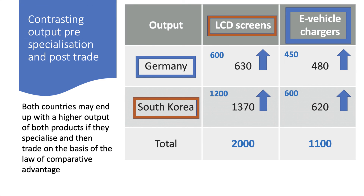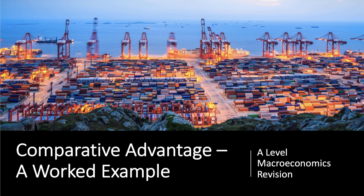Both countries are, in theory, better off than they were before. You can develop this analysis using production possibility curves — there is a video on that. You can challenge the assumptions and think about why this theory might not work in reality. This is the simplified model of comparative advantage, but hopefully a useful exercise for showing how two countries in theory can benefit from specialization and mutually beneficial trade. Thank you for joining in.